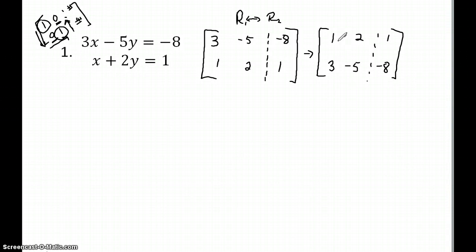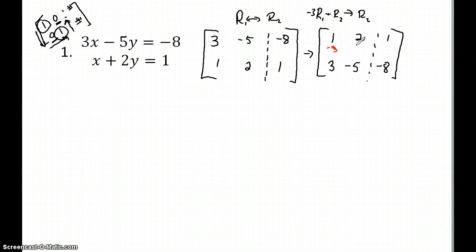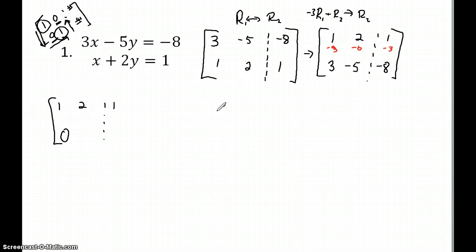We got the one. Now, in order to get this three to be a zero, I'm going to multiply the top row by negative three and then add these two rows. So I'm going to take row one, multiply it by negative three, add it to row two, and replace row two. That gives me negative three, negative six, and negative three. Adding: negative three plus three is zero, negative five plus negative six is negative eleven, and negative eight plus negative three is also negative eleven.